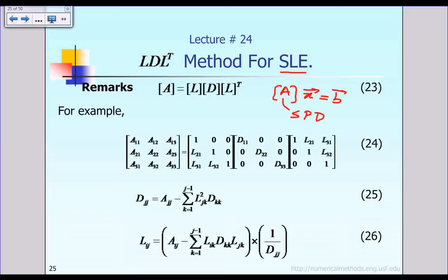If that matrix is symmetric positive definite, then we can use the Cholesky method discussed in the previous lecture. However, in many engineering and science applications, the matrix is still symmetric, but it may not be positive definite — in fact, it could even be negative definite. In that case, we can use another algorithm called LDL transpose factorization.